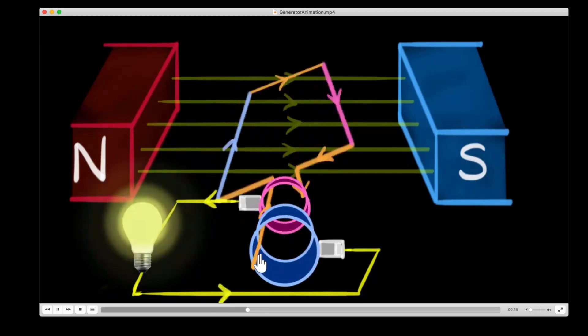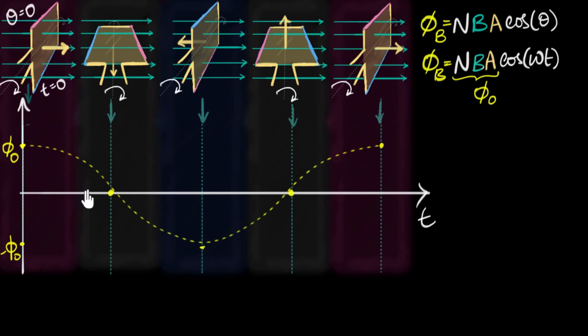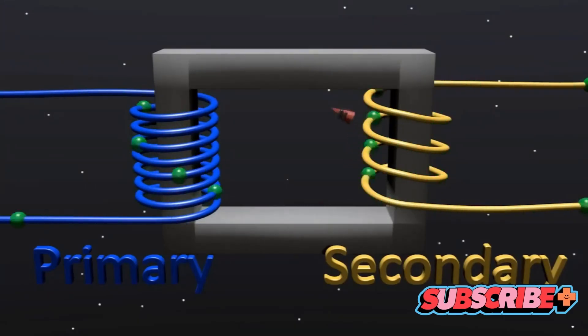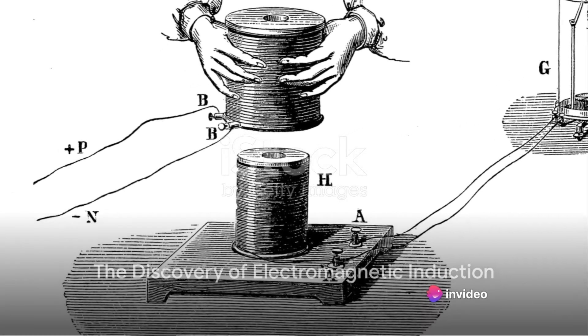Electromagnetic induction is a cornerstone in the field of electrical engineering. It's the principle that allows us to convert mechanical energy into electrical energy, and it's at the heart of many devices we use daily, from electric generators to transformers. But what exactly is electromagnetic induction, how does it work?